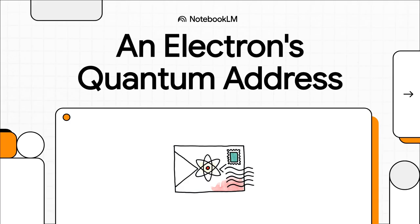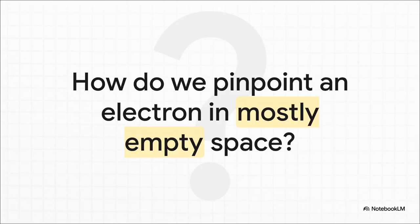So, how does it all work? I mean, that's a great question, right? We're always told that atoms are almost entirely empty space, so how on earth can we even begin to describe where an electron might be?